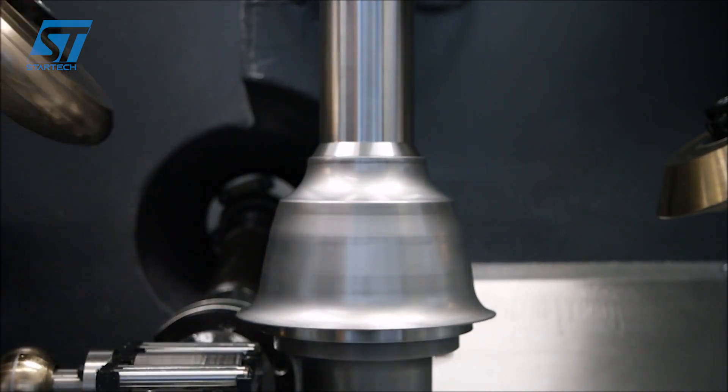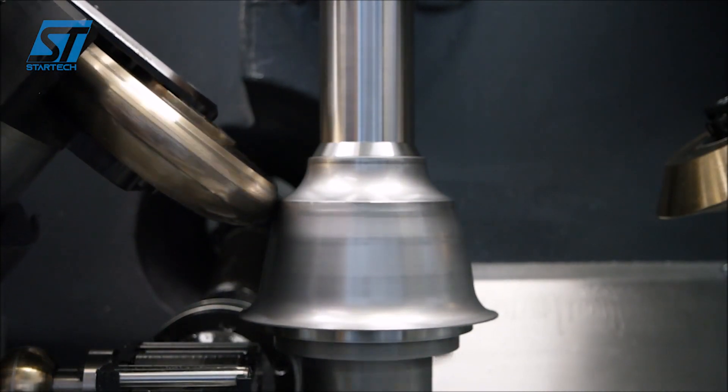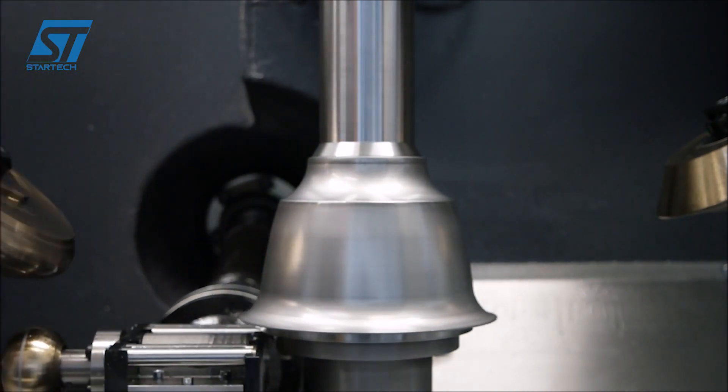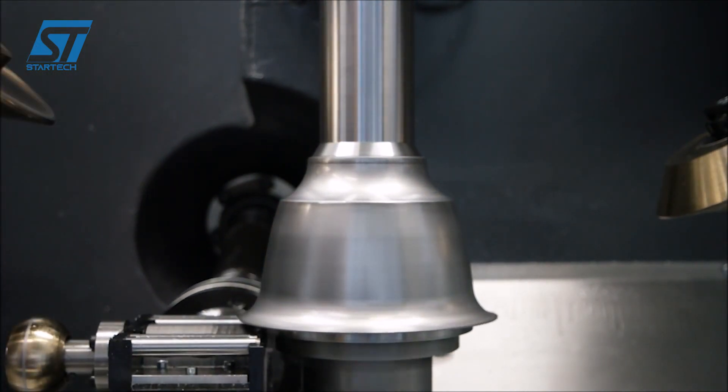The mandrel rotates at high speed while a roller tool, guided by the CNC program, presses against the blank. This gradually forms the steel over the mandrel.